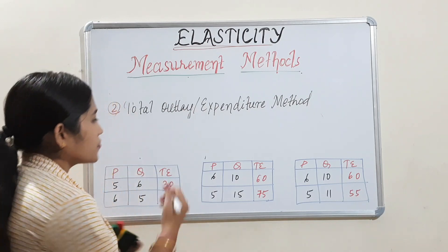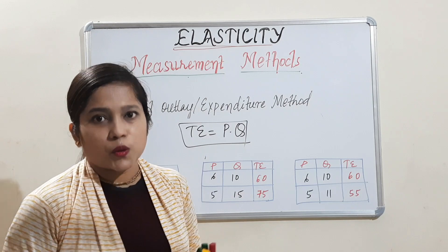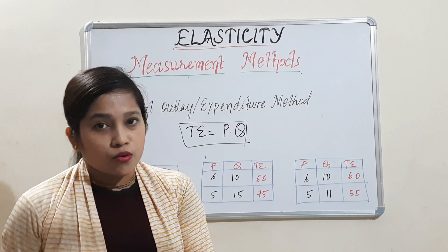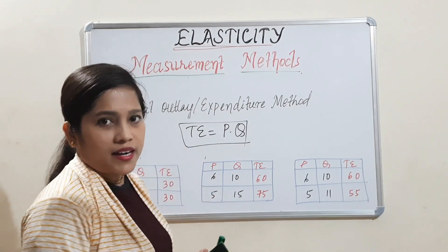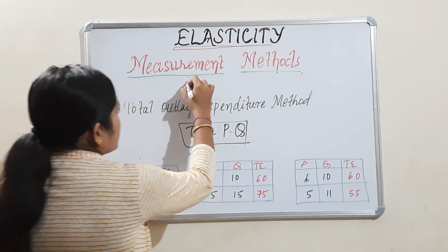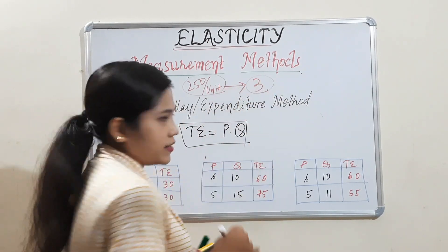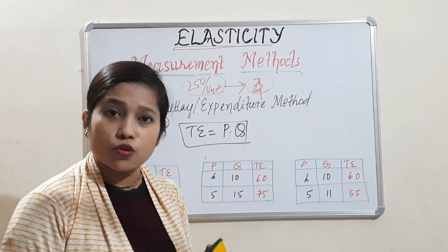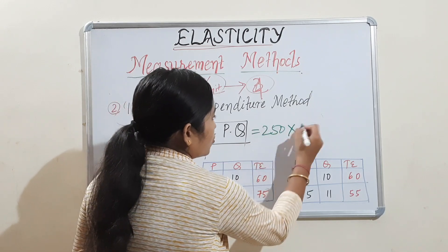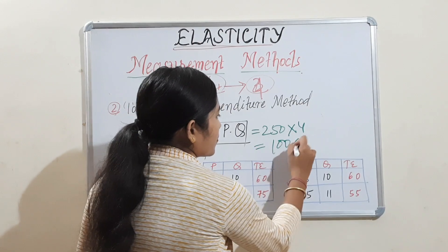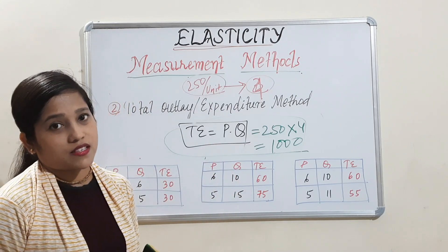Total expenditure equals price into quantity. That means when you went to the market to purchase any commodity, the unit price multiplied by the amount of units you have purchased gives you the total expenditure. Suppose you went to the market to purchase shoes, and the shoe price is $250 per unit and you purchased four shoes. Your total expenditure will be $250 into 4, which equals $1,000. So in this way we are measuring total expenditure.